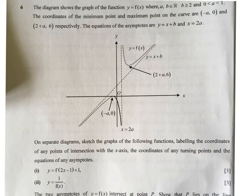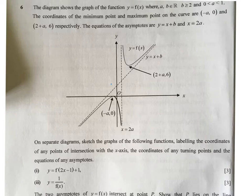This is before question 6. For this question, you are given the graph of y equals f(x) where a and b are real, b is greater than or equal to 2, and a is between 0 and 1. The coordinates of the minimum point are negative a and 2 plus a is 6 respectively.